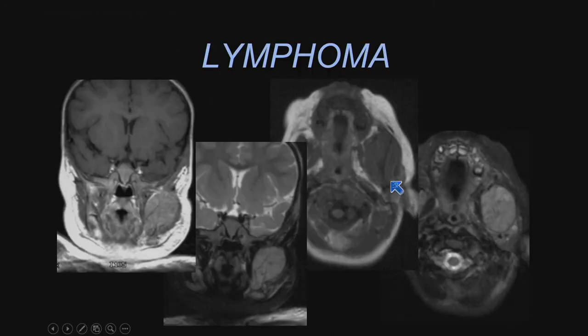Here's a patient with masticator space lymphoma. Because of the high nuclear-to-cytoplasmic ratio and the densely cellular nature of lymphoma, this will also restrict diffusion.